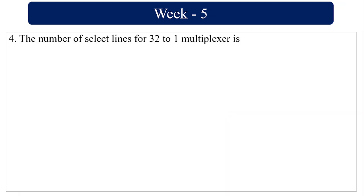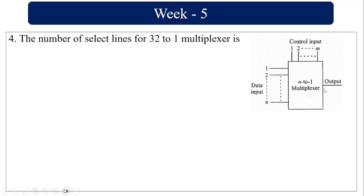The number of select lines for a 32-to-1 multiplexer: this is the general block diagram of the multiplexer with N input lines. We say this is an N-to-1 multiplexer where N = 2^m and m is the number of select lines. Here they have given 32, and 32 = 2^5, so it is going to be 5 select lines.